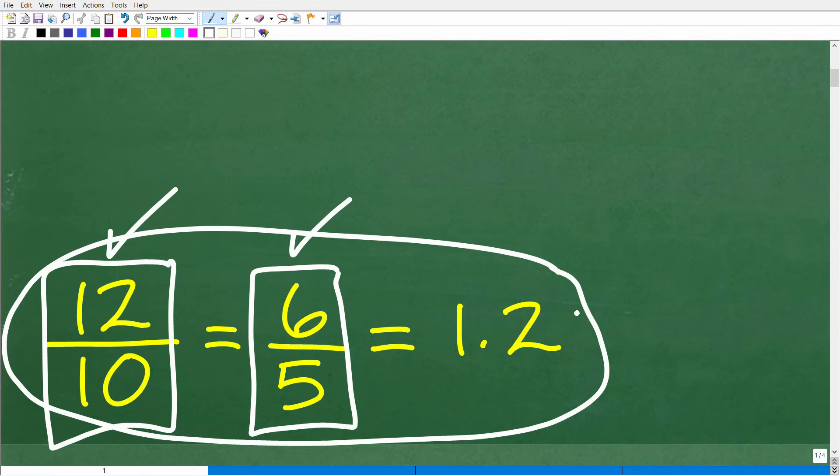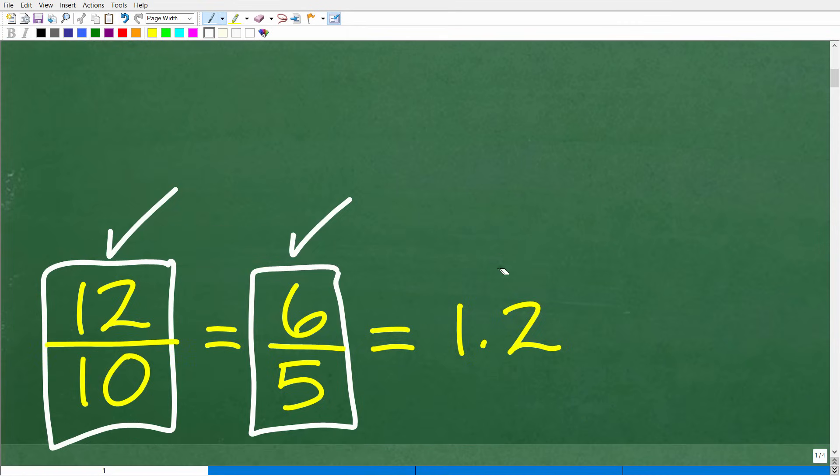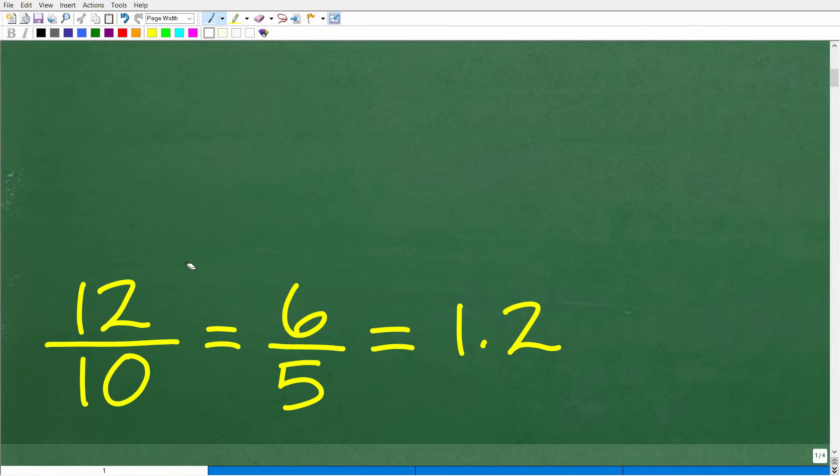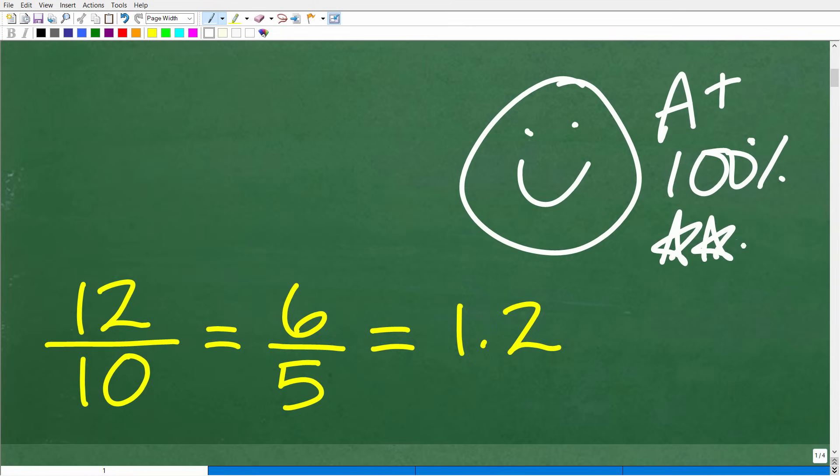This is even better. And if you did this as a decimal, 1.2, that's even amazing as well. Well, so any of these answers I would consider correct. Meaning that, hey, your brain function is looking pretty good there. And we must celebrate by giving you a nice little happy face and a plus a 100% and multiple stars. So you could tell your friends and family that indeed you have been eating your Wheaties. Your brain has been very strong.